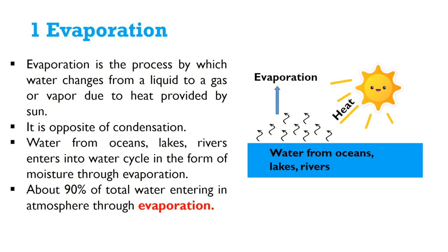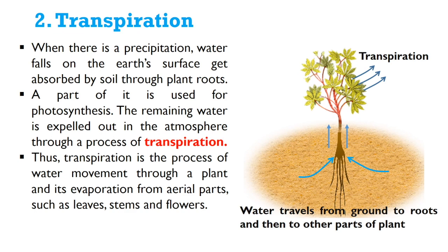About 90% of total water entering the atmosphere does so through evaporation and transpiration. When there is precipitation, water falls on the Earth's surface and gets absorbed by the soil through plant roots. A part of it is used for photosynthesis. The remaining water is expelled into the atmosphere through transpiration. Transpiration is the process of water movement through a plant and its evaporation from aerial parts such as leaves, stems, and flowers.